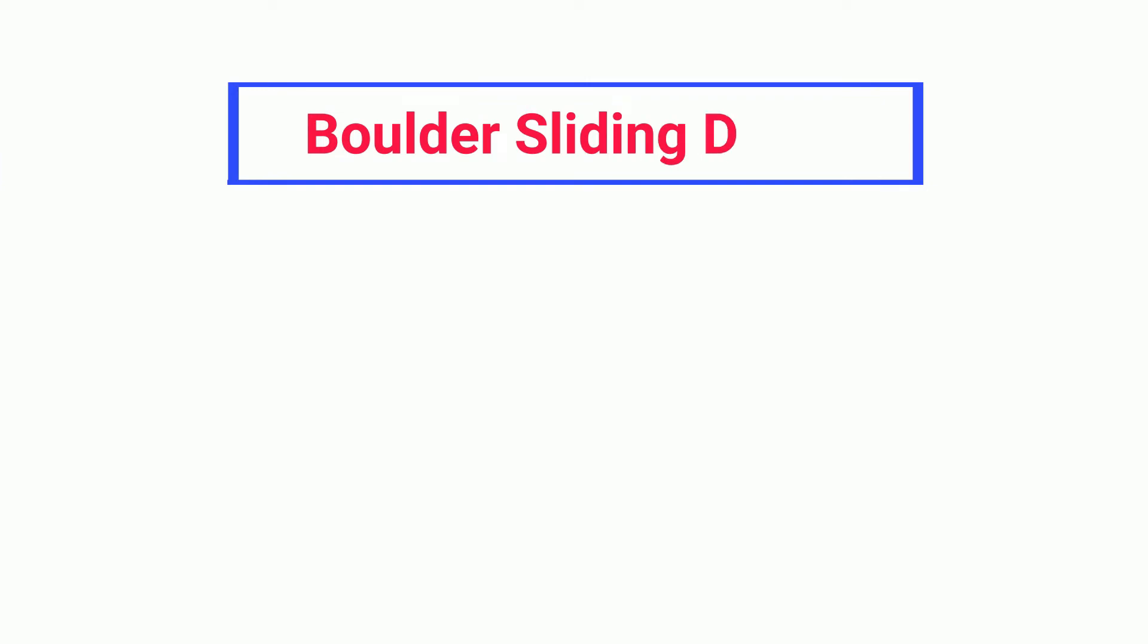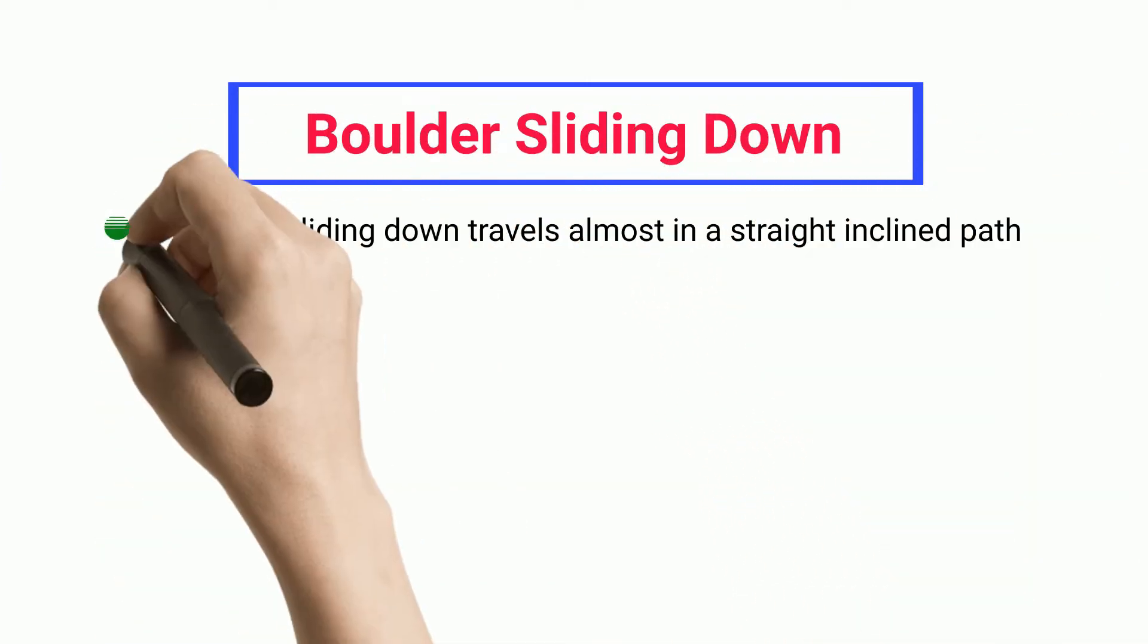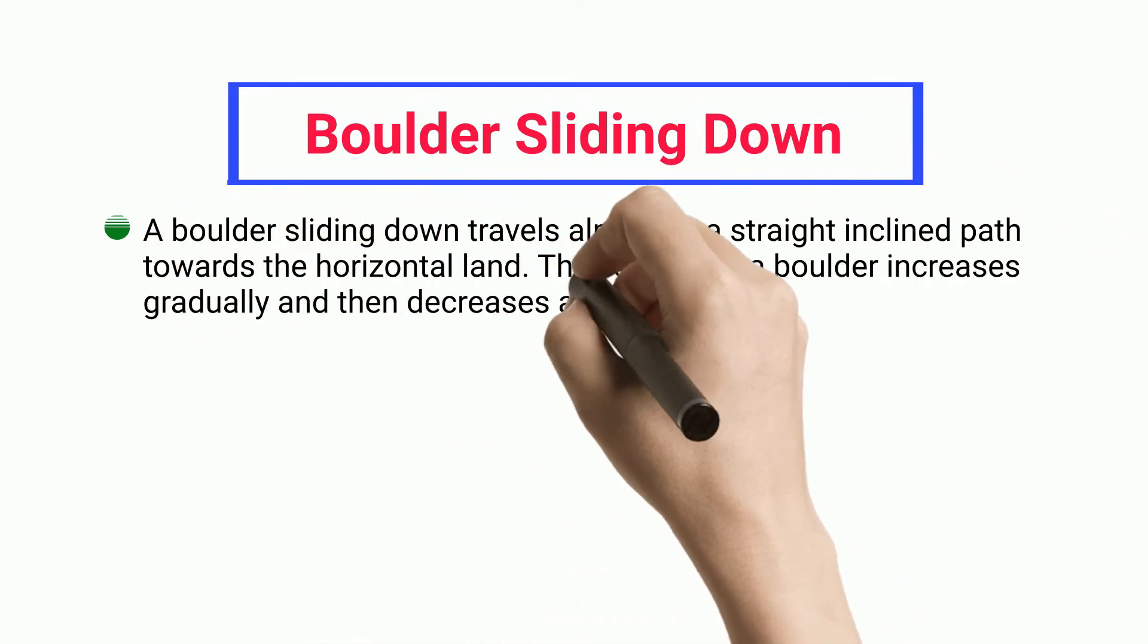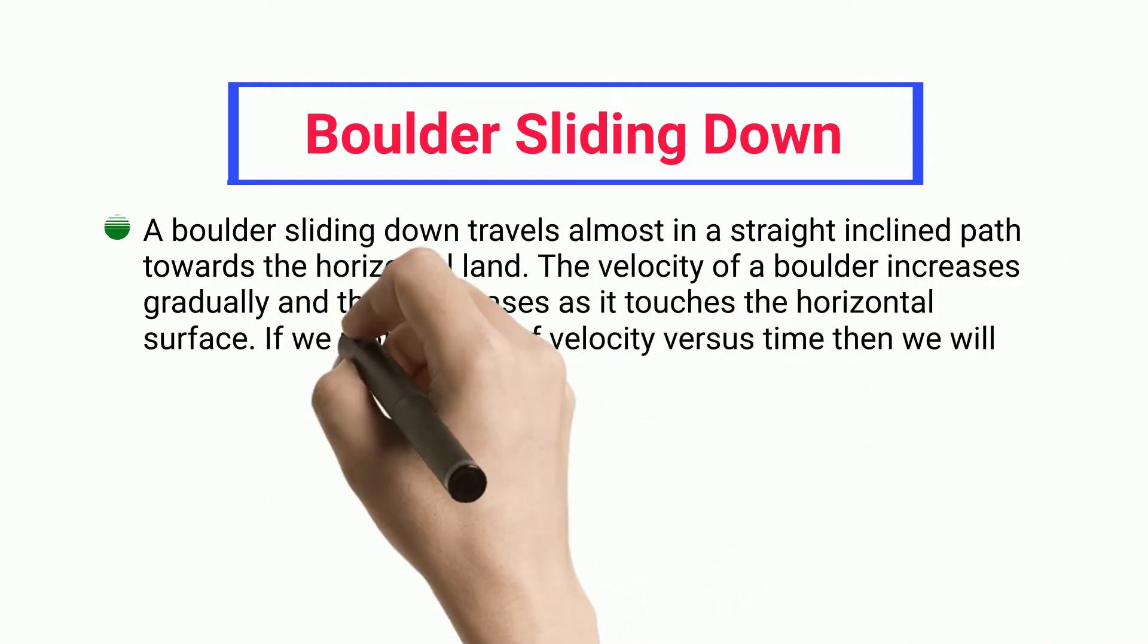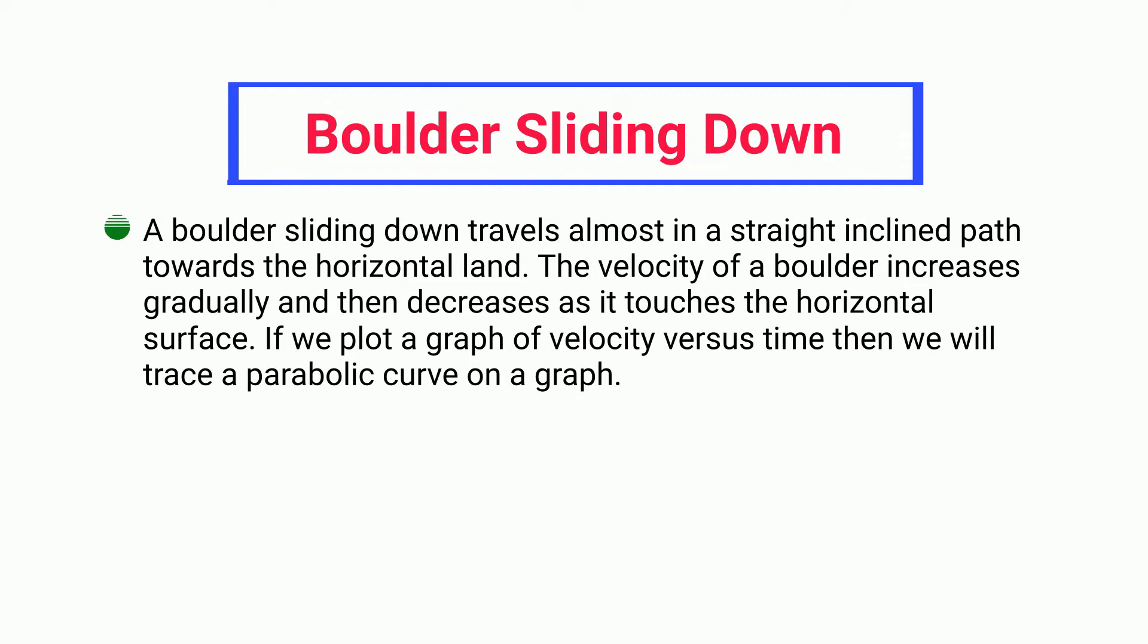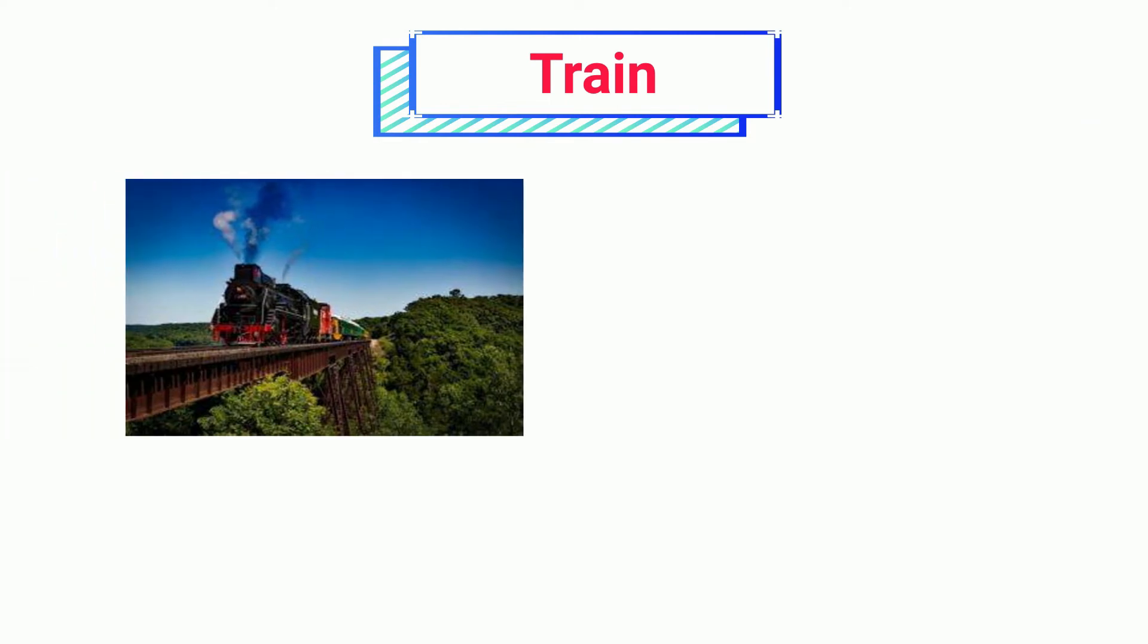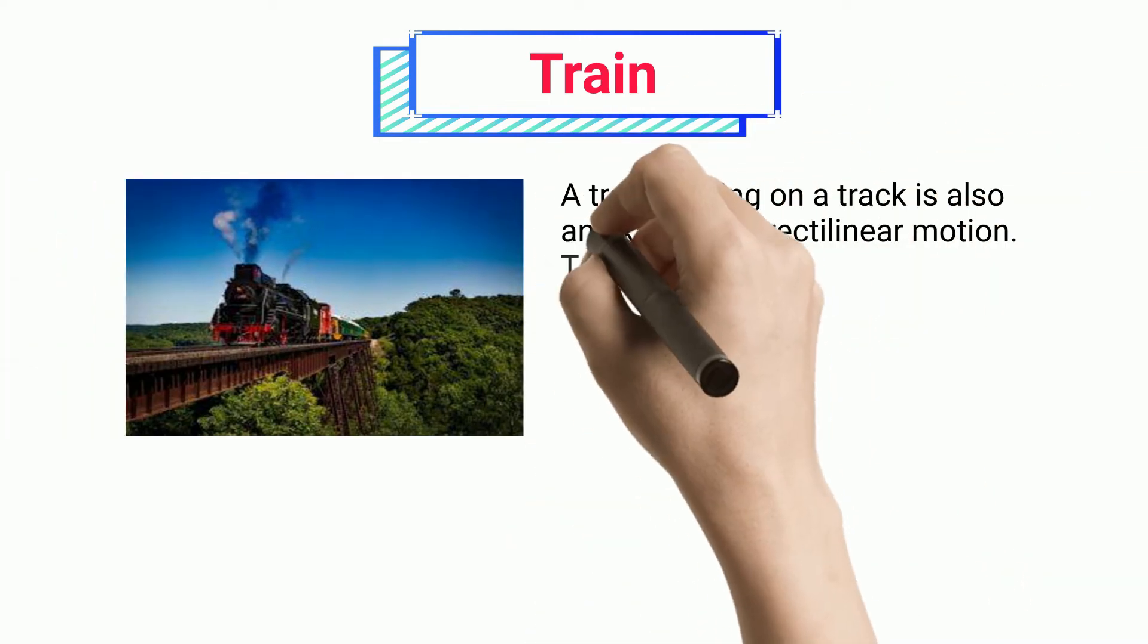Boulders sliding down: A boulder sliding down travels almost in a straight inclined path towards the horizontal land. The velocity of a boulder increases gradually and then decreases as it touches the horizontal surface. If we plot a graph of velocity versus time, we will trace a parabolic curve on a graph. Train: A train moving on a track is also an example of rectilinear motion.